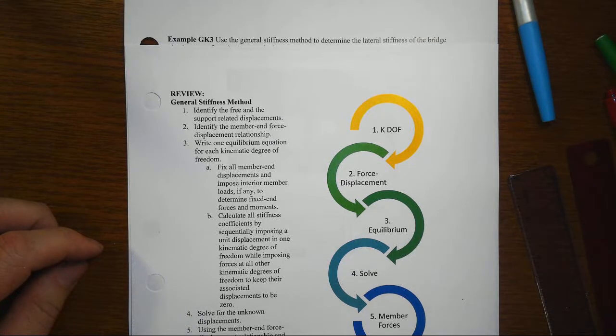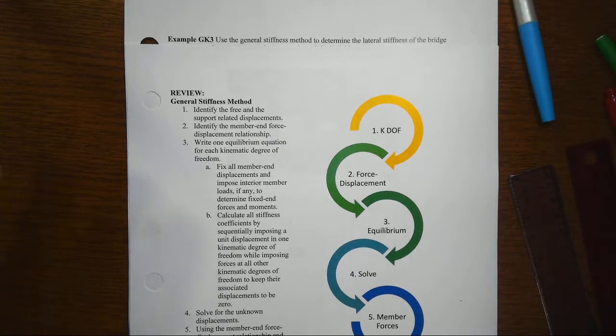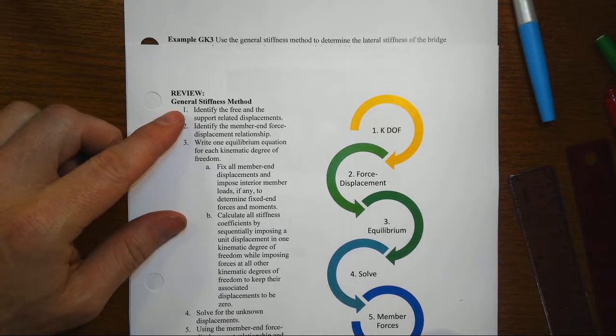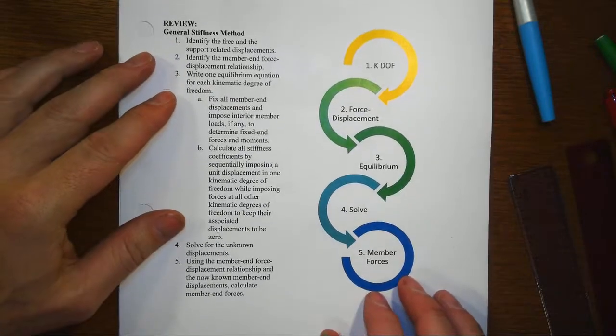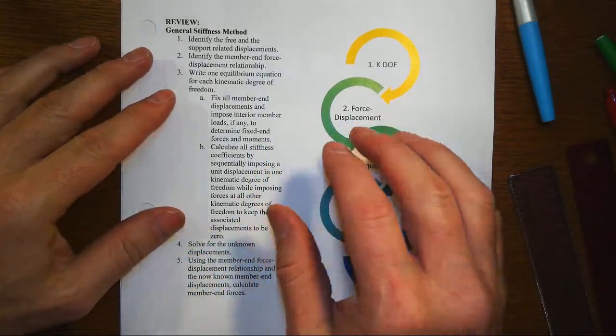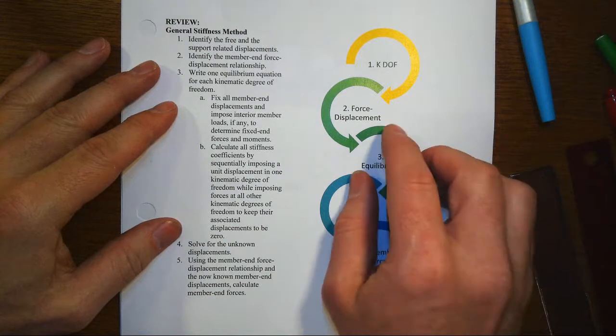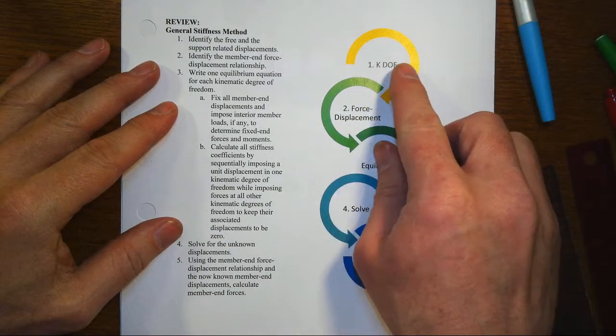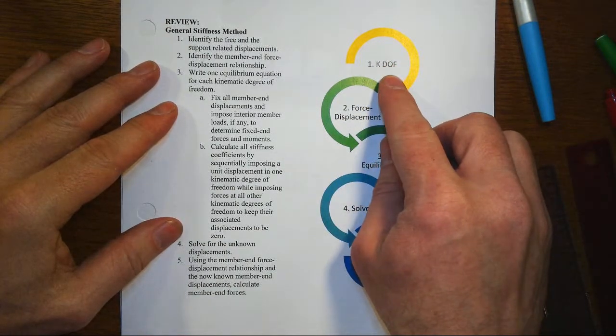Okay, in this example associated with the general stiffness approach, let's first review what this general stiffness method is all about. Procedurally, it's about this five-step approach where we're going to identify what the kinematic degrees of freedom are in our model.